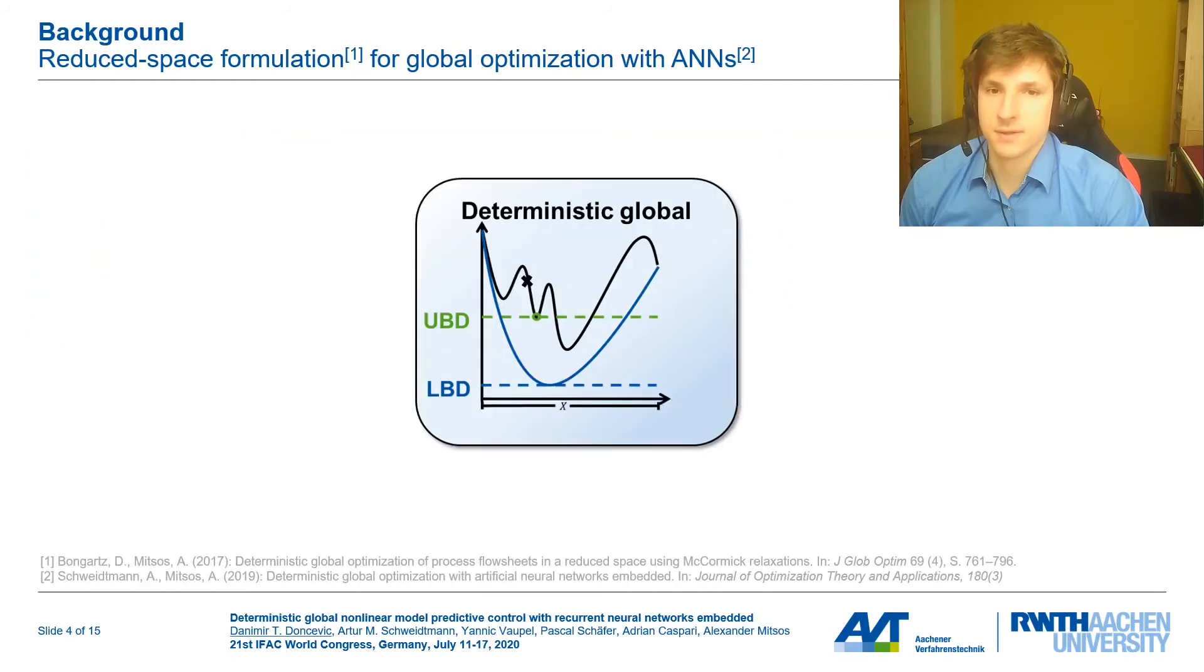Okay, so now we take a closer look at the proposed method. First, a quick recap about global optimization as we will use it here. If we have this black function here, the main idea is that we build these blue convex relaxations of the function, which help us find lower bounds and convex sub-problems. Then when we branch on the search space of the function, we can close in on the global optimum. In this study, we are going to use McCormick relaxations to construct these convex relaxations of non-convex problems.